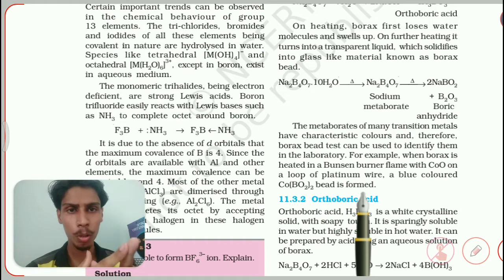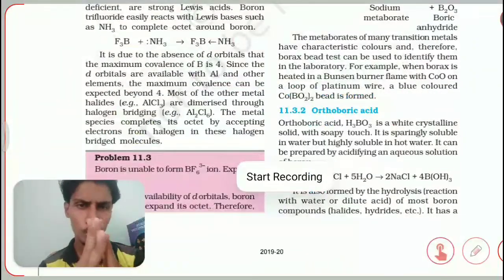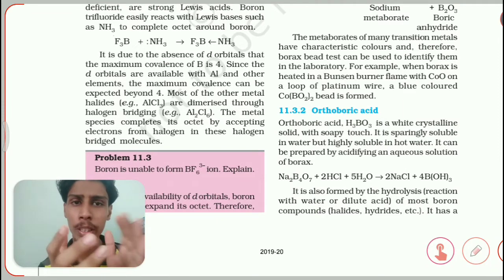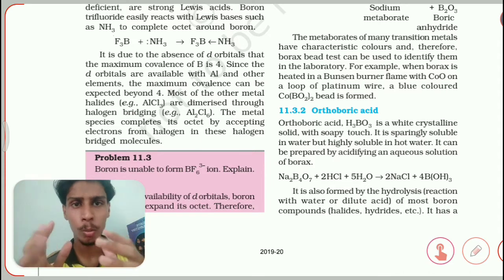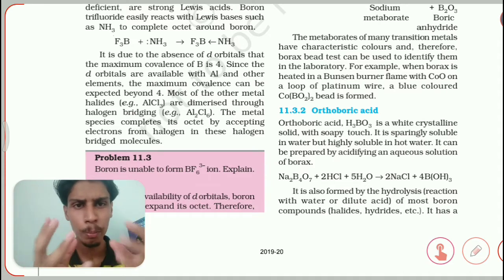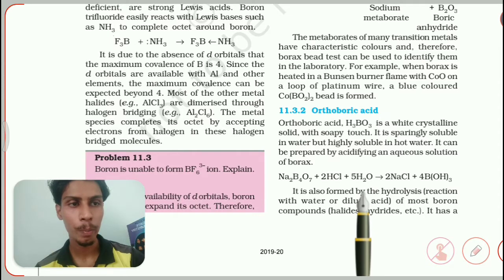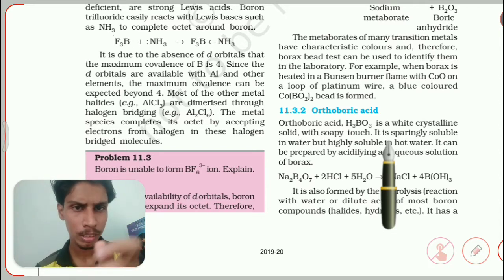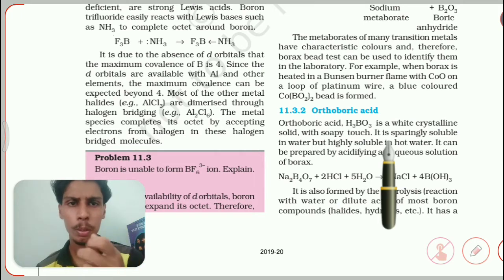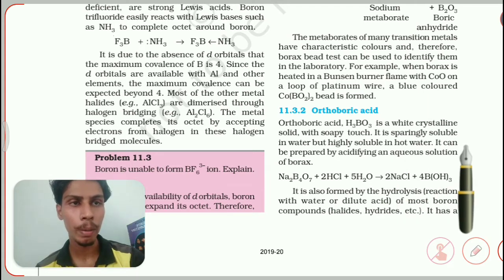Now we will see the next topic: orthoboric acid. The orthoboric concept has relatively less content but there are many small, very important chemistry topics within it. Orthoboric acid, H₃BO₃, is a white crystalline solid with a soapy touch — similar to how NaOH feels soapy. It is sparingly soluble in cold water, meaning it won't dissolve completely; it will only dissolve partially. But it is highly soluble in hot water — when you increase the temperature, it will completely dissolve.